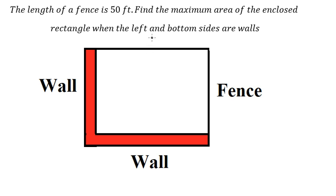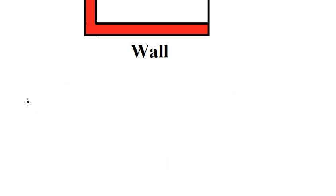I will put the total length of the fence as 50 feet. If we put s here, then the second side should be 50 minus s. Now we can apply the formula of the area.